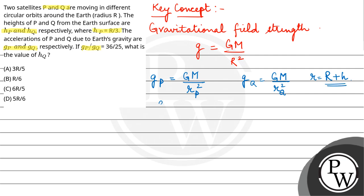So you have given that GP upon GQ is equal to 36 by 25. So this will be equal to GM upon RP square divided by GM upon RQ square. This will be equal to RQ square upon RP square. Now you have given the height RP from earth surface, that is R by 3.